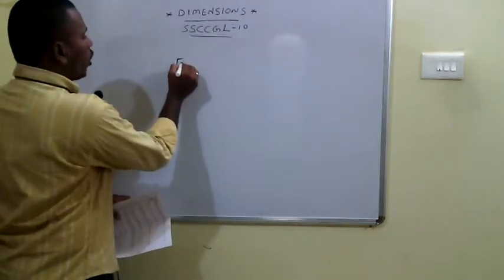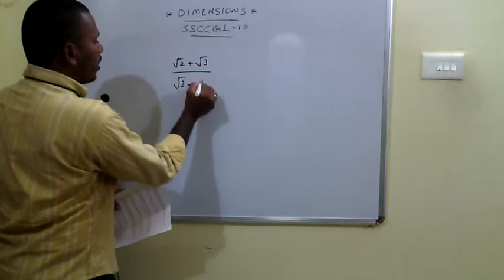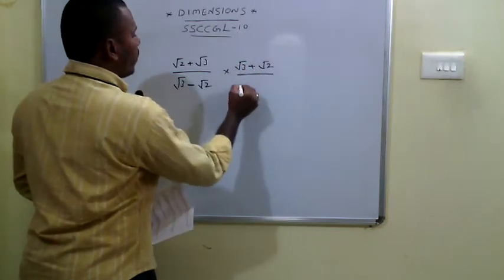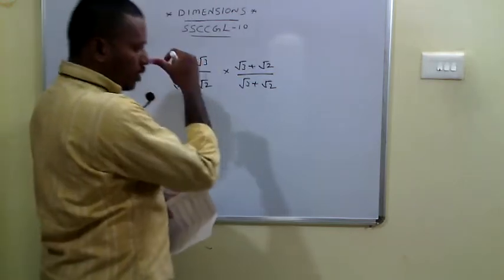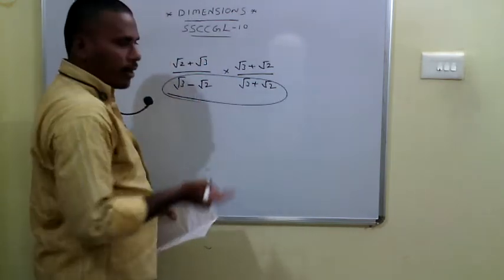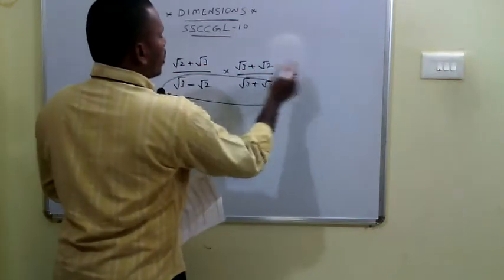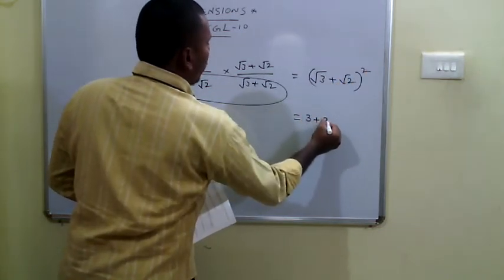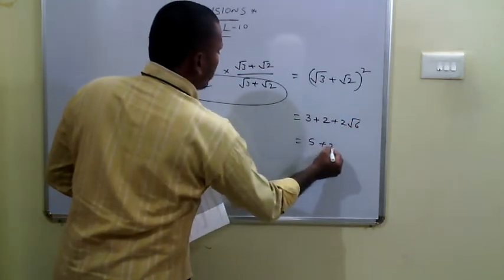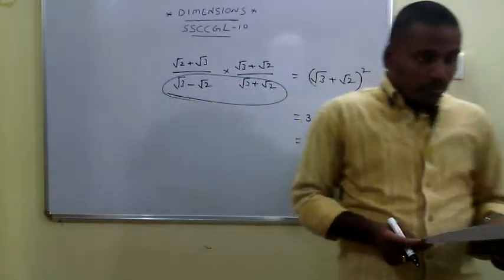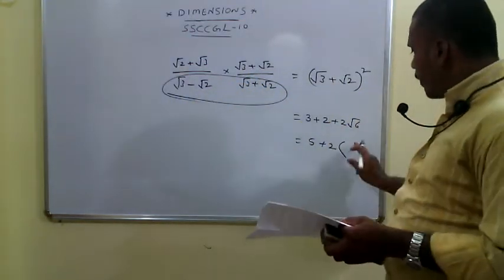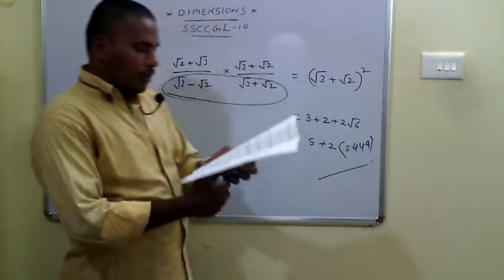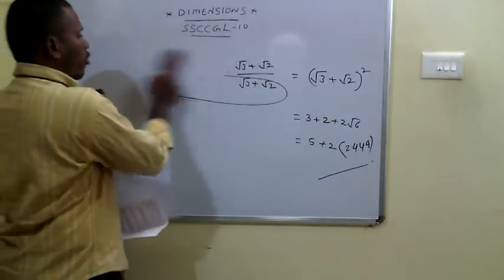The 59th problem: given √600, calculate (√2 + √3)/(√3 − √2). Multiply numerator and denominator by (√3 + √2): the denominator becomes (√3)² − (√2)² = 1, and the numerator becomes (√3 + √2)² = 5 + 2√6. Since √600 = 24.49 and √6 = 2.449, substituting gives 5 + 2 × 2.449 = 9.898.